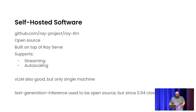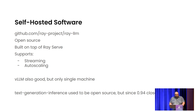VLLM is also good — that's an open source project from Berkeley, but it really only focuses on single machines. You can combine the benefits of Ray LLM and VLLM together. Hugging Face used to give everybody something called Text Generation Inference, but about three months ago they decided to flip that from open source to closed source. So there's a licensing question there about using Text Generation Inference that you may want to investigate.